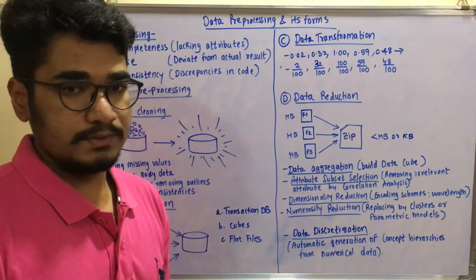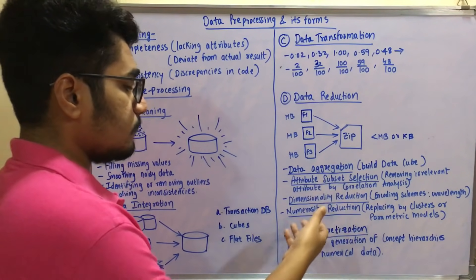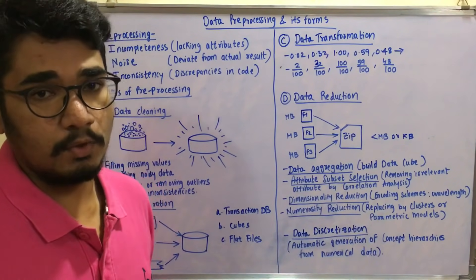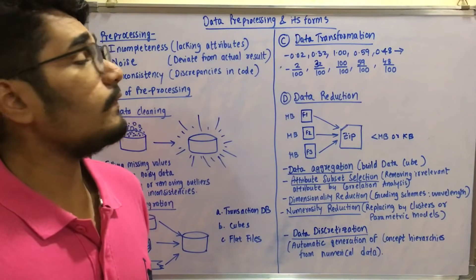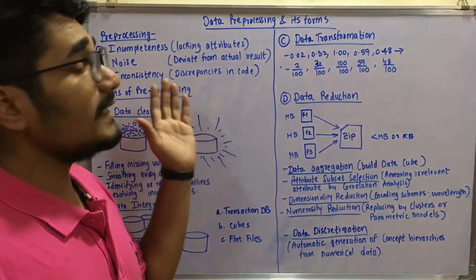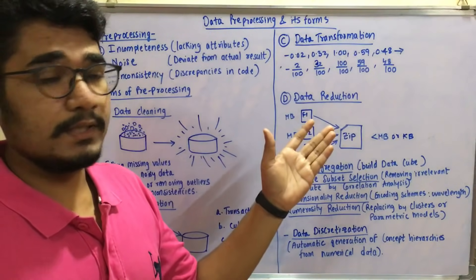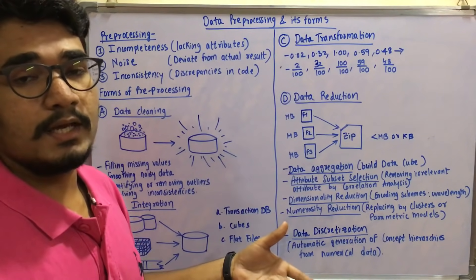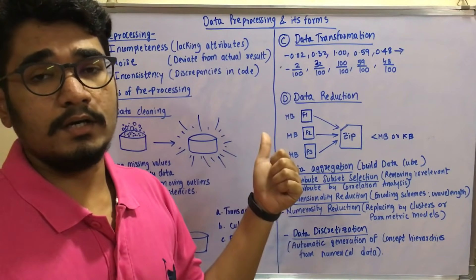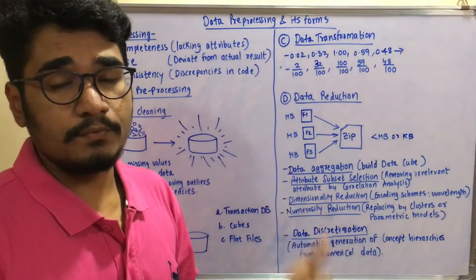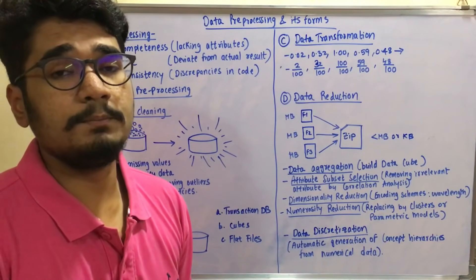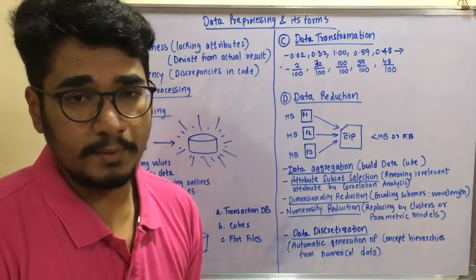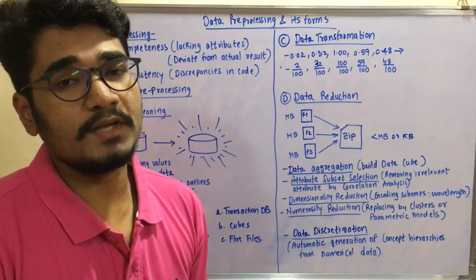The most important data reduction technique is data discretization — the automatic generation of concept hierarchies from numerical data. You apply macros or formulas in Excel or other formats to generate concept hierarchies in a tree or rule structure, aggregating and summarizing the data. That is what data discretization is all about. So that covers data preprocessing and its different forms — data cleaning, integration, transformation, and reduction. If you found this video helpful, please hit the like button and subscribe to the channel.